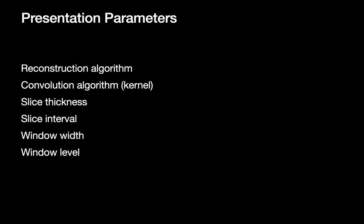Presentation parameters define the character of the images we create from raw data acquired after the scan. There are six presentation parameters to be familiar with: the reconstruction algorithm, the convolution algorithm (or kernel), the image slice thickness, the image slice interval, the window width, and the window level.